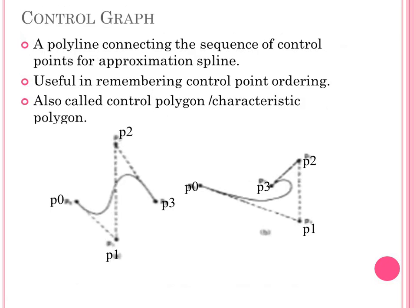The next term used in spline representation is the control graph, also called the control polygon or characteristic polygon. Starting from the first control point, if we make lines from first to second, then second to third, then third to fourth and so on, we get a control graph. For example, making a line from P0 to P1, then P1 to P2, then P2 to P3 gives the control graph for a curve. This is useful in remembering the control point ordering.